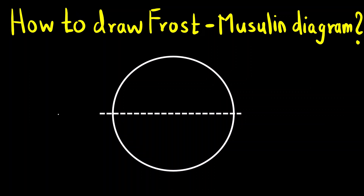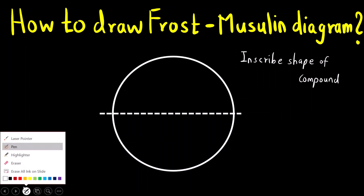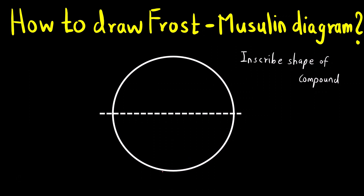Now let us see how to exactly draw a Frost Circle diagram. First, you draw a circle and inscribe the shape of that particular compound inside it. There is an important rule: at the base of the circle you will draw one molecular orbital for any shape. One vertex of the shape will always be at the base of the circle.